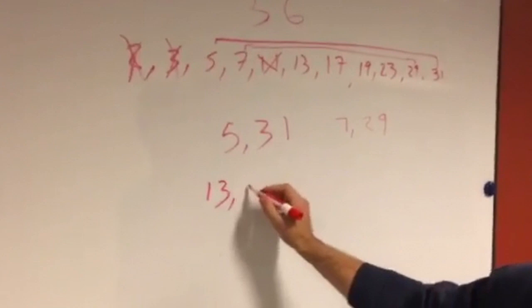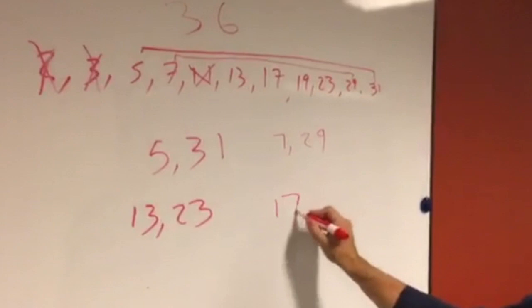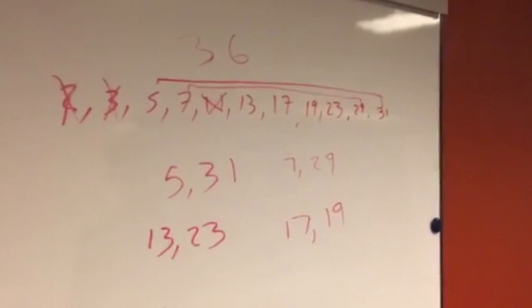And then, we have seventeen left and nineteen left, which are both prime numbers, and they add up to thirty-six. The conjecture states that there is at least one set of prime numbers that add up to a given sum, and we see for thirty-six that we have four sets of prime numbers that add up to thirty-six.